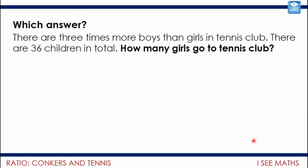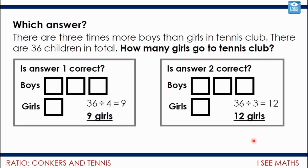Now have a look at this one: there are three times more boys than girls in tennis club, and there are 36 children in total. How many girls go to tennis club? There are two possible drawings here — I want you to look at them and decide which one is correct, and explain the mistake on the other one. Pause the video and have a go.